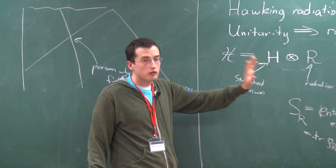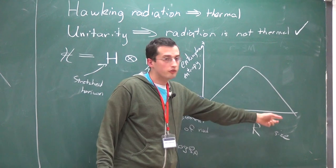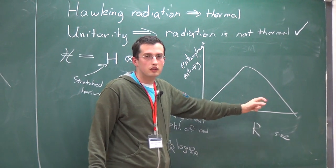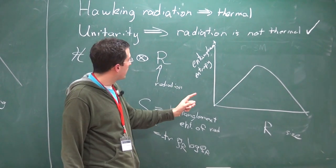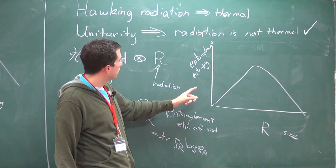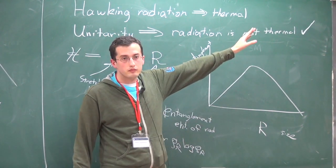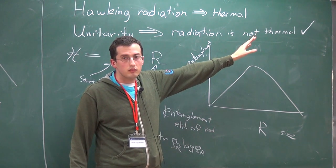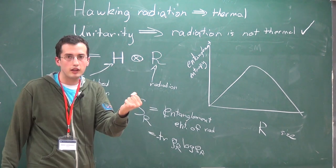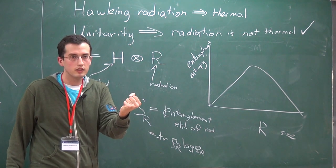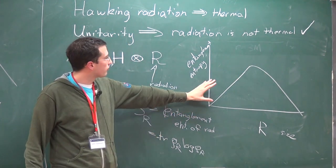You could think of different models which have entropy curves other than this. For example, the remnant model has the entanglement entropy just going up the whole time, because there's always going to be a remnant left over that the radiation is entangled with. That's a different model. But this is the Page model, and this is the one accepted most by the community, even though there's no specific justification in terms of the actual black hole dynamics.